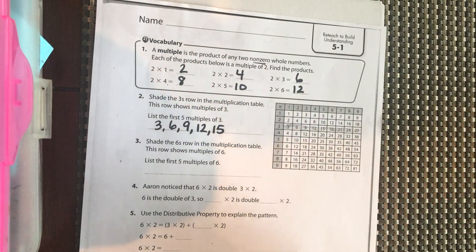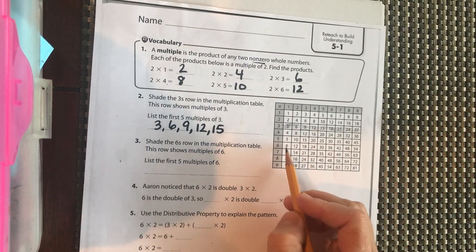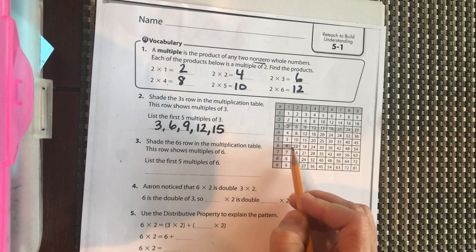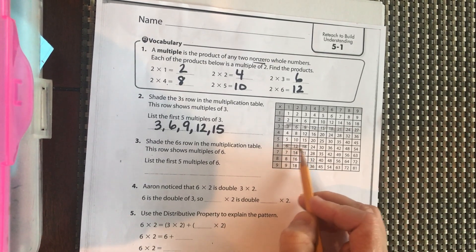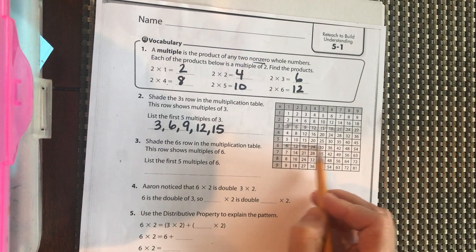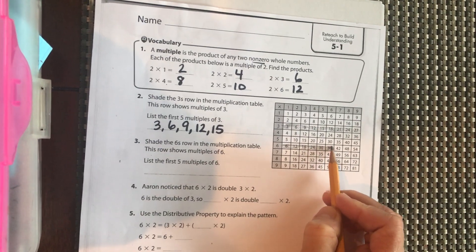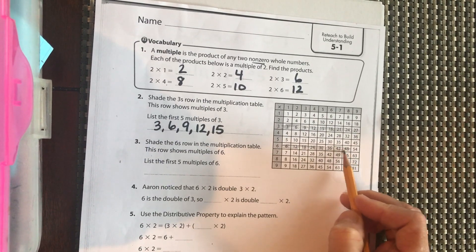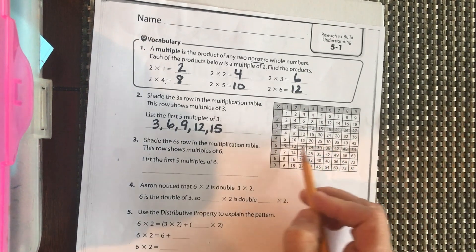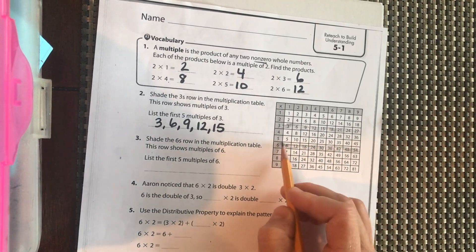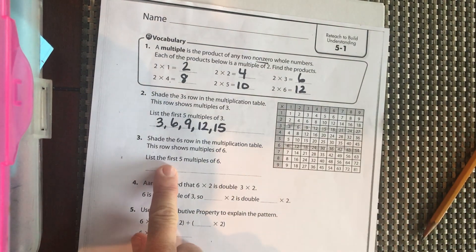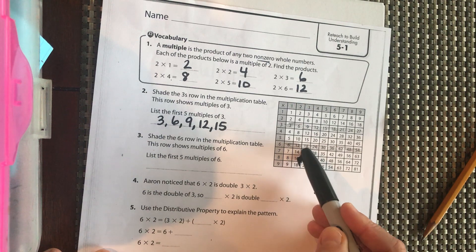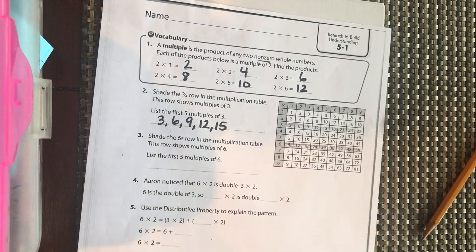Now they want us to shade the multiples of 6. 6, 12. So this is 6 times 1, 6 times 2, 6 times 3, 6 times 4, 6 times 5, 6 times 6, 6 times 7, 6 times 8, and 6 times 9. So here's our multiples of 6 that we have shaded. They want us to list the first 5 multiples. So 6, 12, 18, 24, 30.